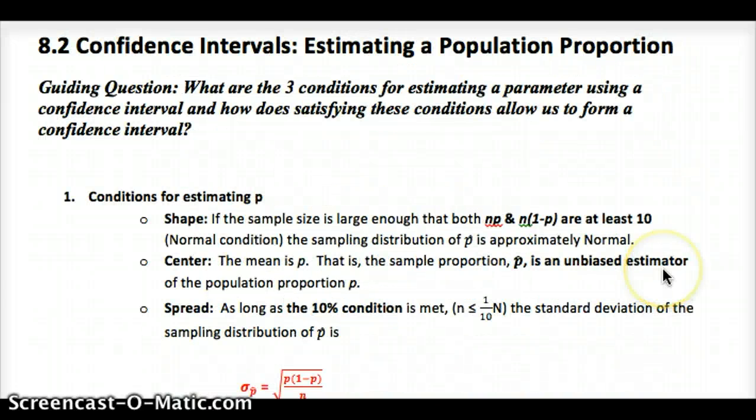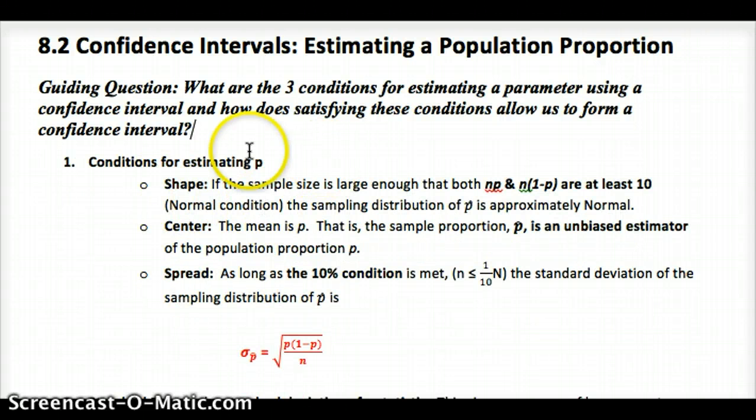So our guiding question involves the three conditions for estimating a parameter using a confidence interval and how satisfying them allows us to form a confidence interval. Now, these are the same as we went over before for sampling distributions. So you should know them well. Shape is the normal condition. Center is the random condition. Spread is the independent condition. That's going to be your free response here, so pay close attention to this.